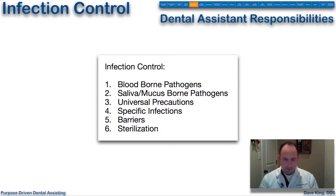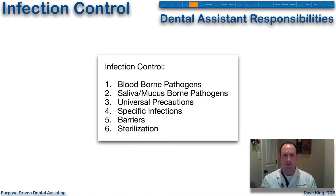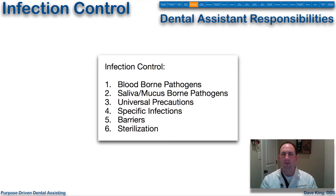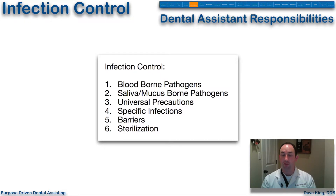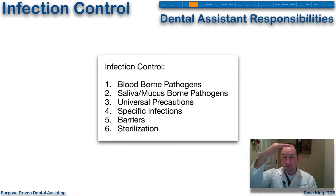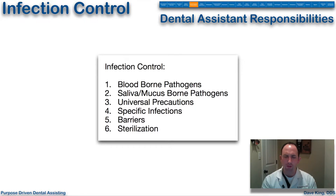We want to control for any blood-borne or saliva/mucus-borne pathogens, and we want to maintain what's called universal precautions. That basically means we treat all patients universally the same — we wear a mask, eye protection, and gloves, wash our hands, and wear protective equipment. We should not treat a patient who has hepatitis or HIV differently from another patient. We should treat them all at the same high standard with regard to infection control and cross-contamination protocol.